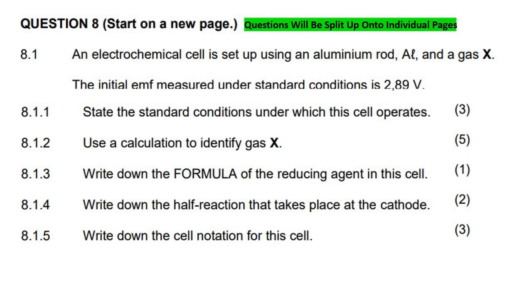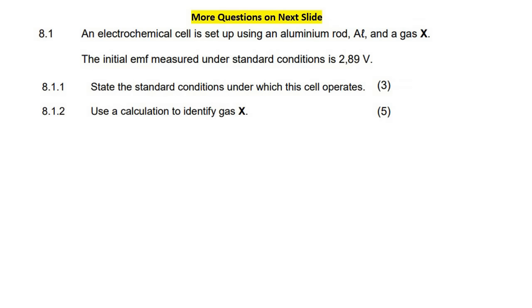Here are all the questions that we will be looking at, but I will split them up so we have more space. Okay, so an electrochemical cell is set up using an aluminum rod and gas X. The initial EMF measured under standard conditions is 2.89V.